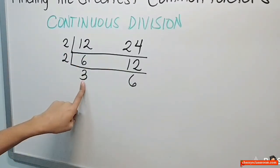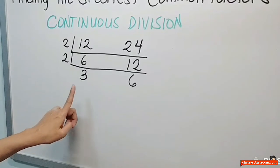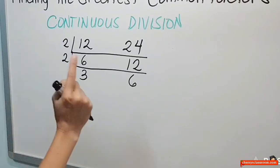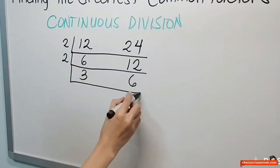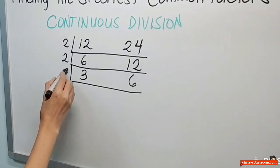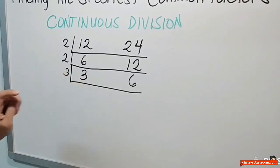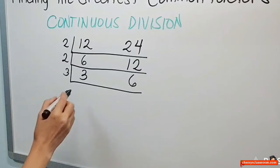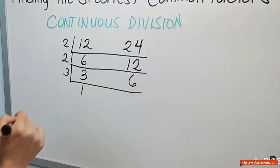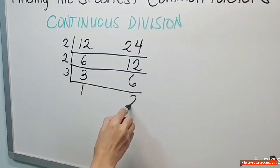Now, prime number na ito, titigil na ba ako? Hindi pa po. Titigil ka lang kung wala ka ng prime number na nakikitang pwedeng i-divide sa dalawa. Sa pagkakataong ito, may isa pa akong prime number na pwedeng i-divide sa 3. At the same time, pwede rin i-divide sa 6. Ano yun? Ang sagot ay 3. Diba? 3 divided by 3 equals 1. At 6 divided by 3, 2.